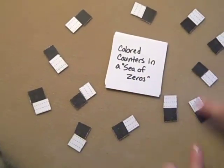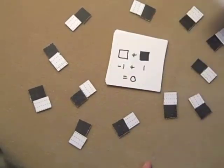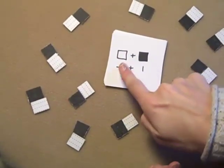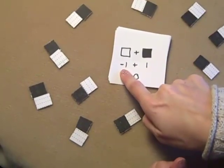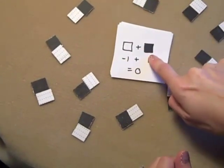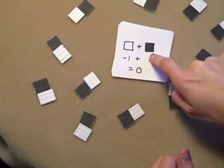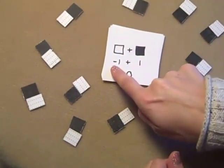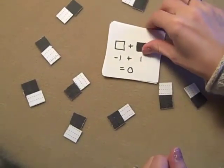Here's the colored counter method in what we call the sea of zeros. The basic idea is you have a counter that represents negatives, and in this case it's the white squares with the little negatives going across them. You have a counter that represents positives, so the black one represents a positive one. When you add a negative one and a positive one, that gives you zero.